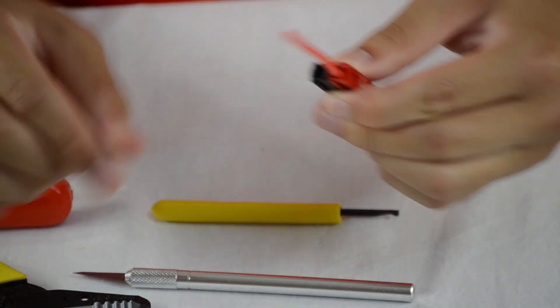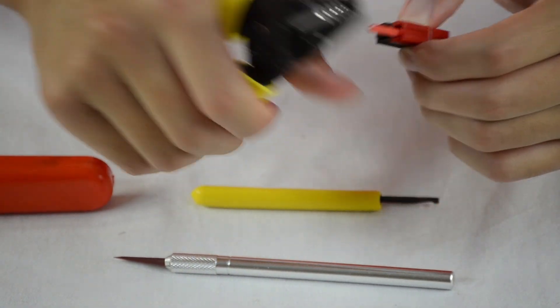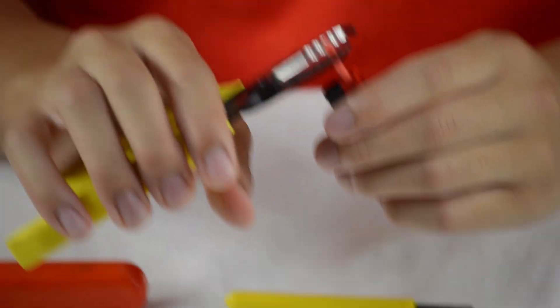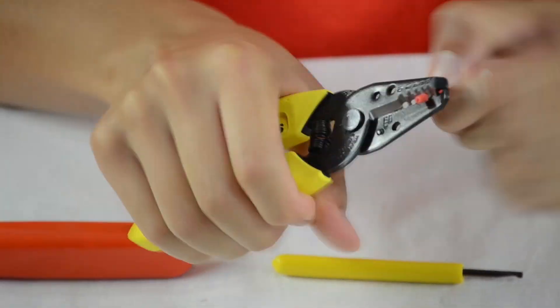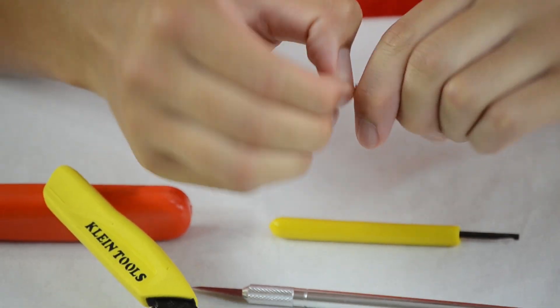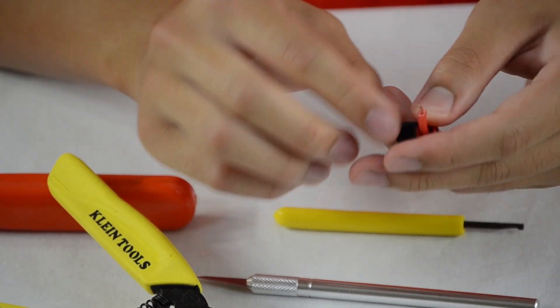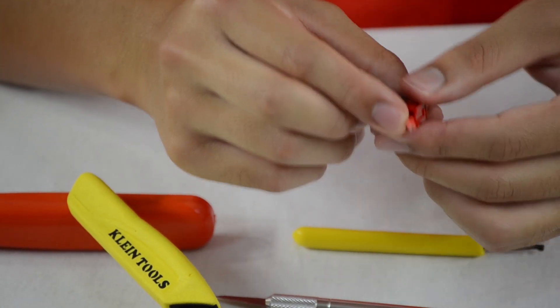Now, if you see that you've cut too much, you can just cut some from the end. Now you're going to also want to actually strip this end as well so that you can insert it into your controller. And if you want to have the best connection that you possibly can, you can actually solder this end so that it's a better connection into the actual controller.